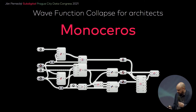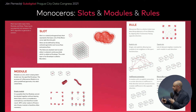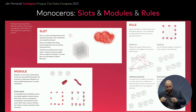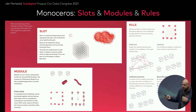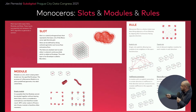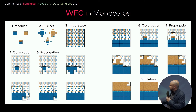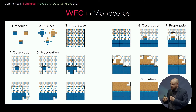What does Monoceros actually do? There are three data types. First is a slot — a spatial envelope you intend to fill. Second are modules — the distinct individual discrete pieces you assemble to entirely fill that envelope of slots. Third are assembly rules — you define which module can be a neighbor of another, and then Monoceros assembles the final result for you.